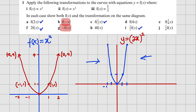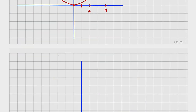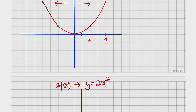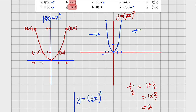Now let us see how this graph can be stretched and compressed along the y-axis by taking 2 times f(x). Since f(x) = x squared, we are going to construct the graph of y = 2x squared. This is an effect on y, because f(x) equals y — so every single y-coordinate will be multiplied by 2. The origin remains at 0, 0 since 0 times 2 is still 0.